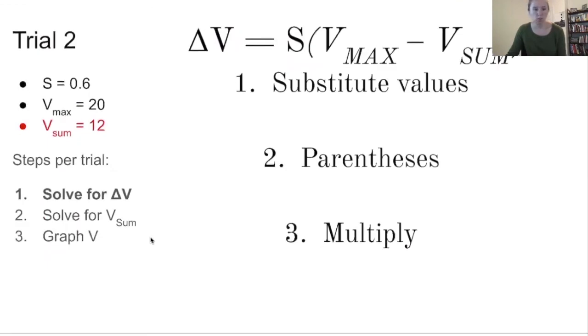So we'll move on to our next trial. I highlighted this just so it was super obvious, but note that on the left side, our values, that V sum has changed. So it has changed to our new V sum value. But our steps are going to be exactly the same for trial two. So our first step is to solve for delta V. And to do that, I'm going to substitute out those values. So salience is still going to be 0.6. V max is still going to be 20. But our V sum is now 12.